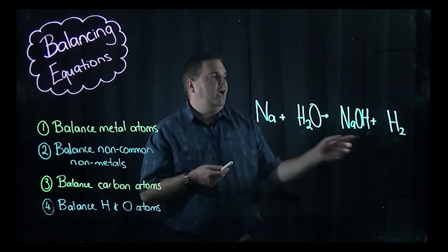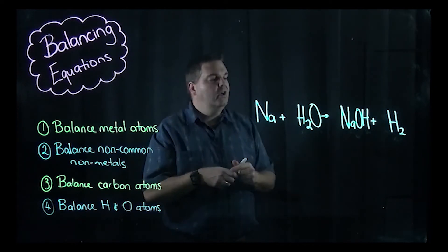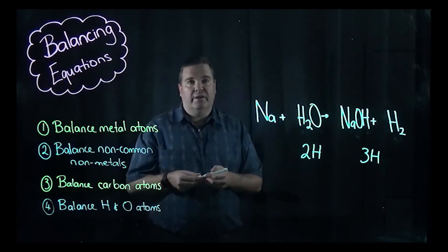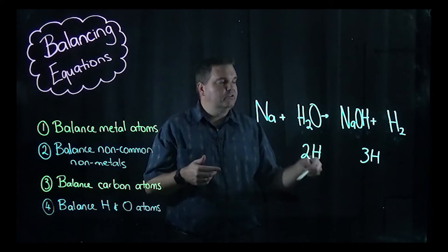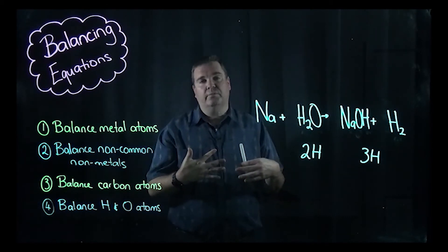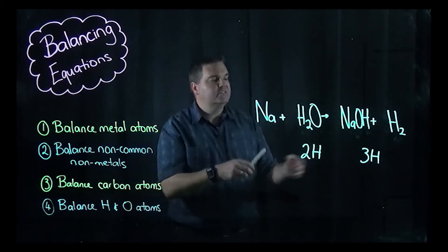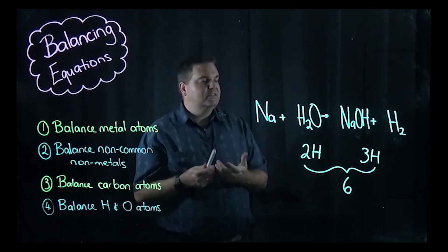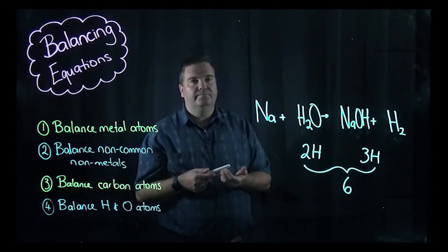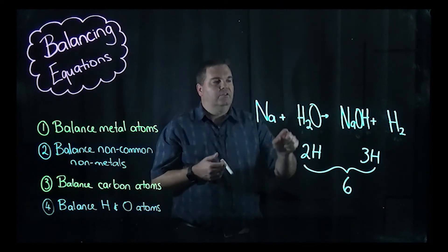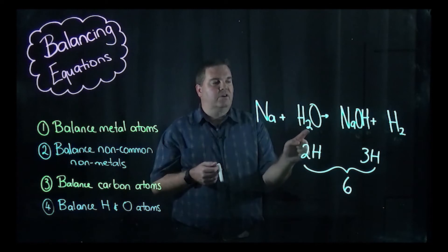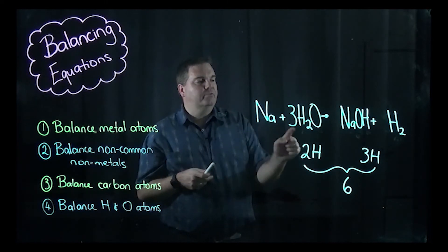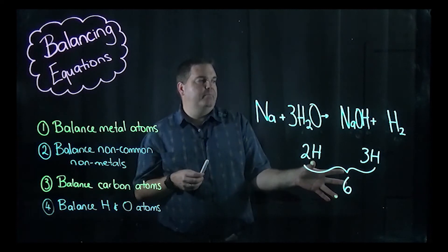Now the hydrogens: two on the left, and one plus two on the right gives three. So we have two hydrogens on the left and three on the right. To balance, look at the lowest common multiple of 2 and 3, which is 6. We want six hydrogens on each side. To get six from the H2O side, put a 3 in front of H2O — three times two gives six hydrogens.